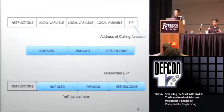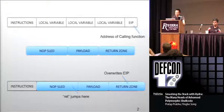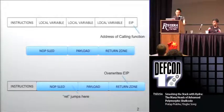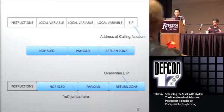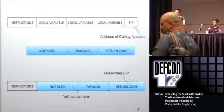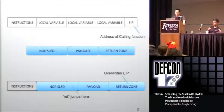Basic stack smashing — from Aleph One's seminal paper in Phrack. This is the stack frame when you call a function. You have the EIP, which is the address where we return to. If you don't have bound checking, you can send a simple exploit with a no-op sled, payload, and return zone. The return zone overrides the EIP, and when the function calls return, it jumps into the no-op sled and passes into the payload. Hydra obfuscates all of these sections and adds more.